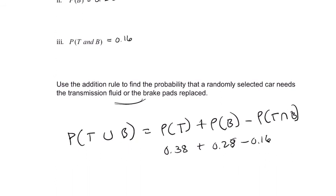3.8 plus 2.8, 3 plus 2 is 5, so it's 50, plus 8 plus 8 is 16, so 0.66 minus 0.16 is exactly 0.5, so half. All right. Hope that helped.